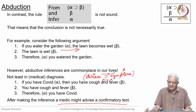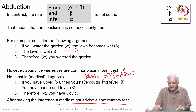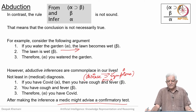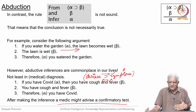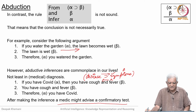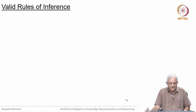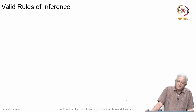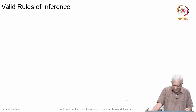Abduction is very useful in real life — we use it all the time, seeing something and inferring what might have caused it — but it is not sound. We are going to focus more on deduction, which gives sound or valid forms of reasoning. Let us quickly talk about how you determine whether a rule of inference is valid.